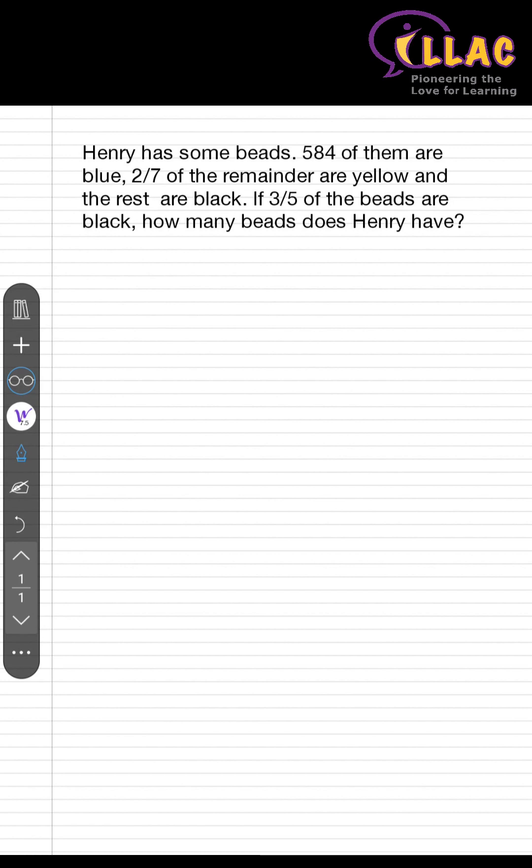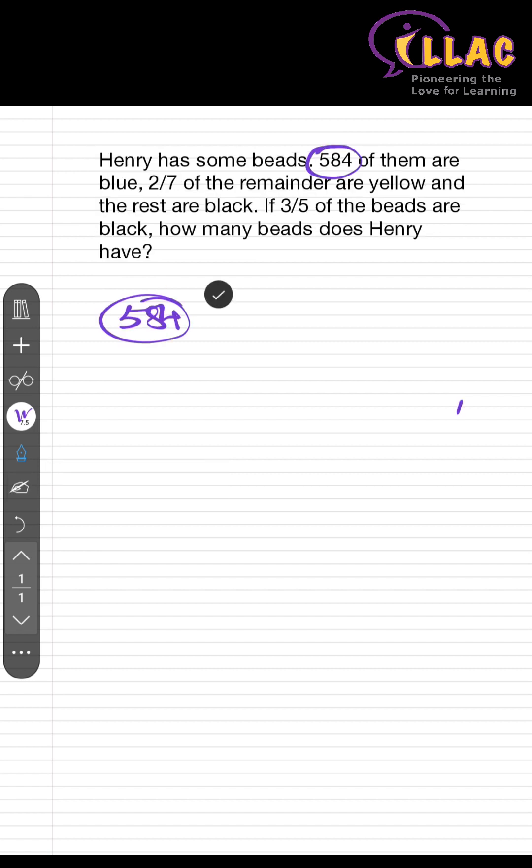Henry has some beads. 584 of them are blue. We are going to break down the sentences one by one and you will see what is going on. These are commonly used methods for solving problem sums and can be applied to all different kinds of questions. Once you know something, draw a circle for the 584 that you know. That is the basic step. Whatever that you know, give it a circle.